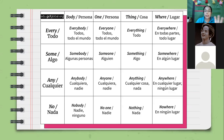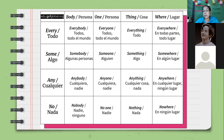The suffix 'body' is used for referring to people. For example, 'everybody' — the meaning in Spanish is 'todos, todo el mundo.' 'Everyone' also means 'todos, todo el mundo.' 'Somebody' means 'alguna persona.' 'Someone' means 'alguien.' 'Anybody' means 'cualquiera.' 'Anyone' means 'cualquiera' or in some cases 'nadie.' 'Nobody' means 'nadie, ninguno.' 'No one' also means 'nadie.'